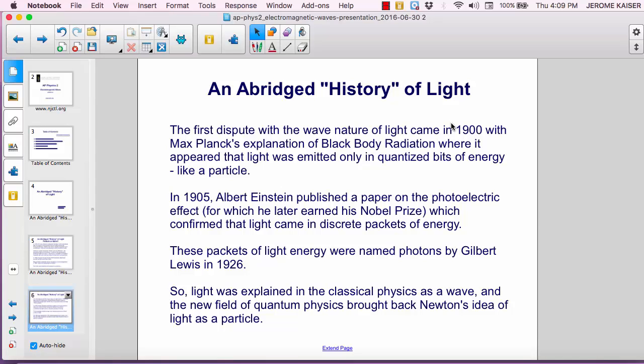In 1905, Albert Einstein published a paper on the photoelectric effect for which he later earned his Nobel Prize. That paper confirmed that light came in discrete packets of energy. These packets of light energy were named photons by Gilbert Lewis in 1926.